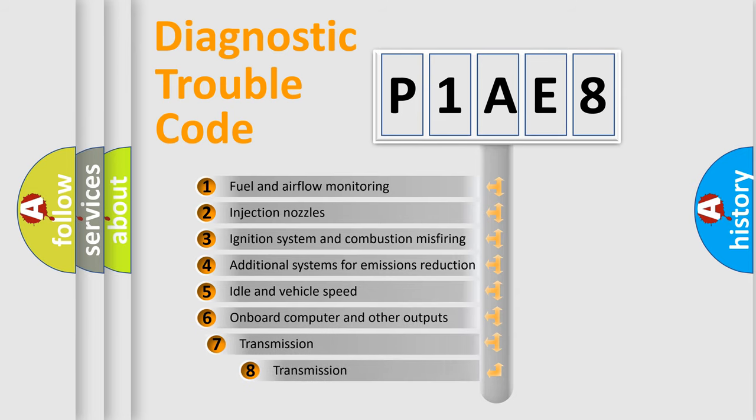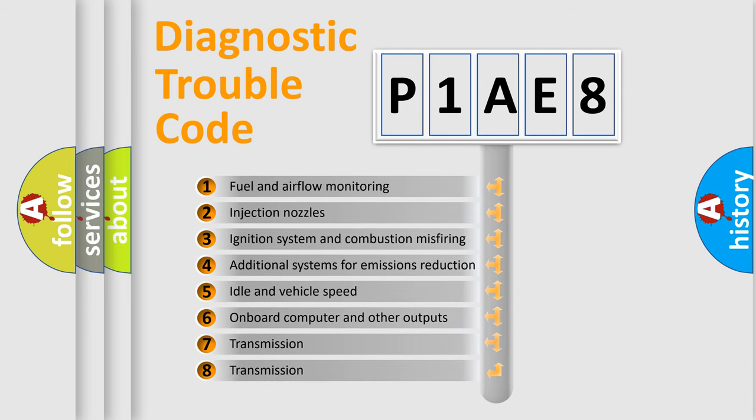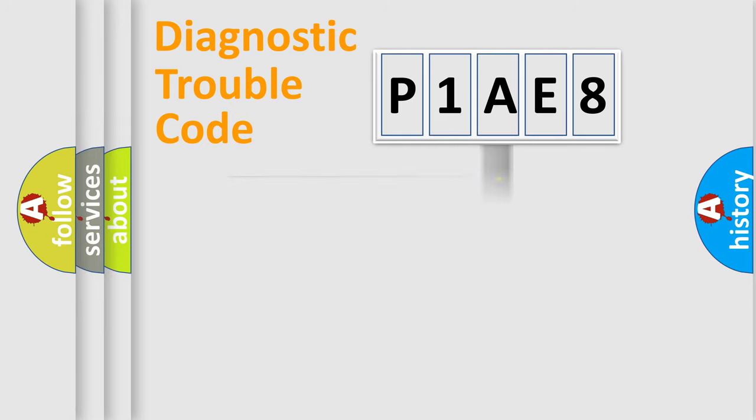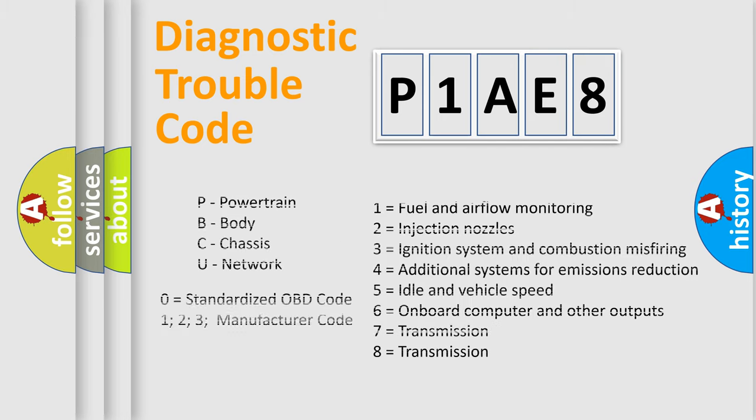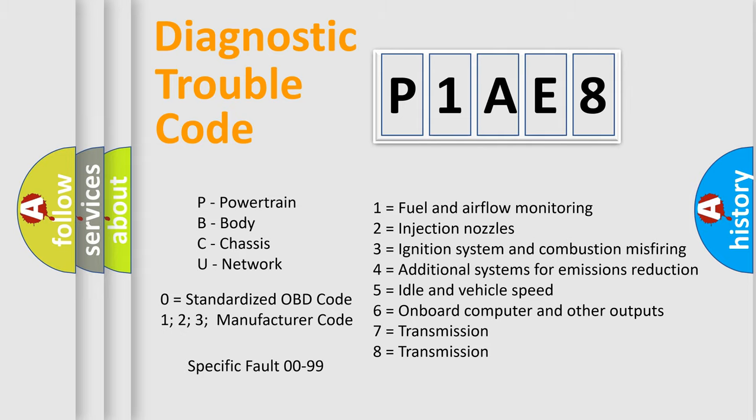The third character specifies a subset of errors. The distribution shown is valid only for the standardized DTC code. Only the last two characters define the specific fault of the group. Let's not forget that such a division is valid only if the other character code is expressed by the number zero.